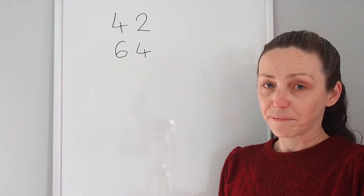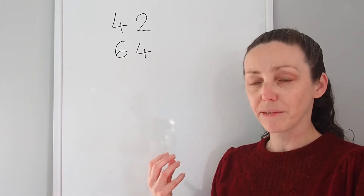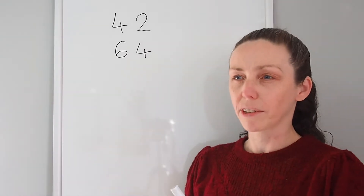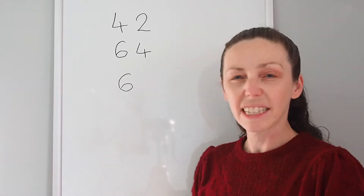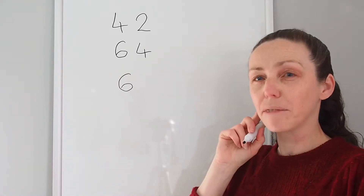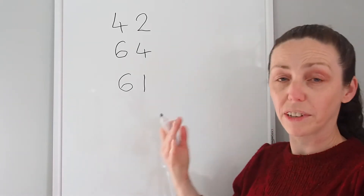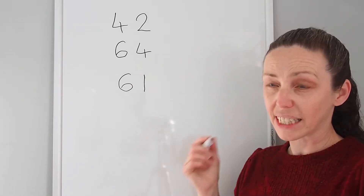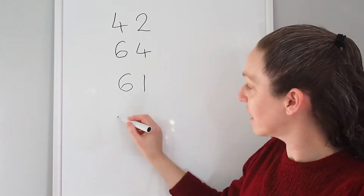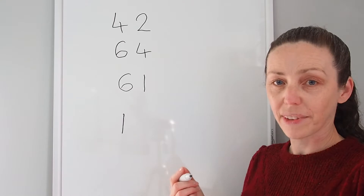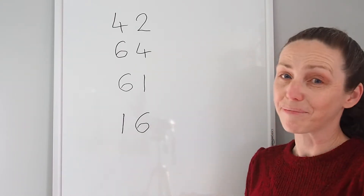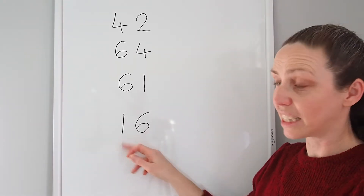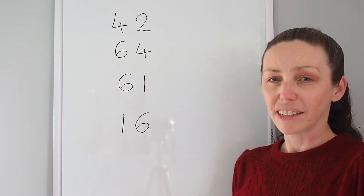Teen numbers are different though. When we hear a teen number, what we're hearing first is the last part of the number — the units digit. So 16, we hear the 6 first. And quite often children will write 6 and then think about the teen. They may know it means 1, but following on from what they already do with other numbers, they write the 1 second. They need to know that teen is a 10 and goes first, and that the 6 goes second. So effectively we're reading and writing those numbers back to front — 16, as opposed to 64. That's why it's so confusing.